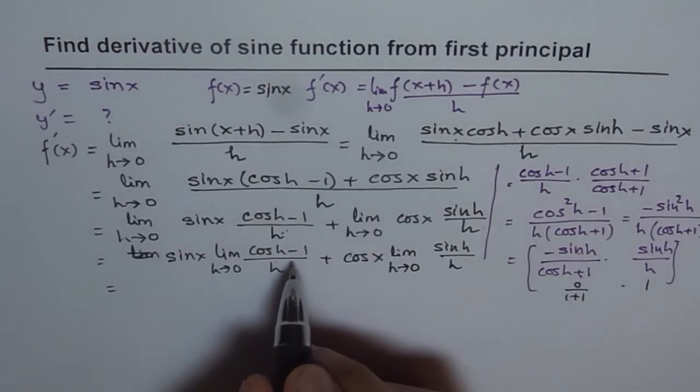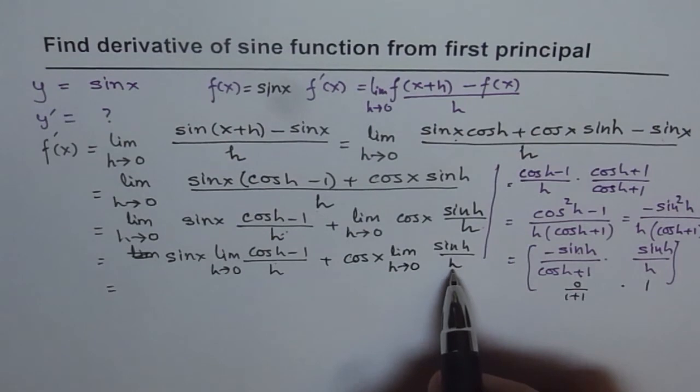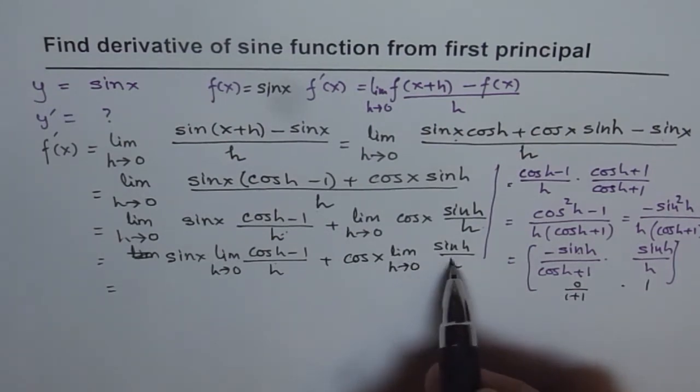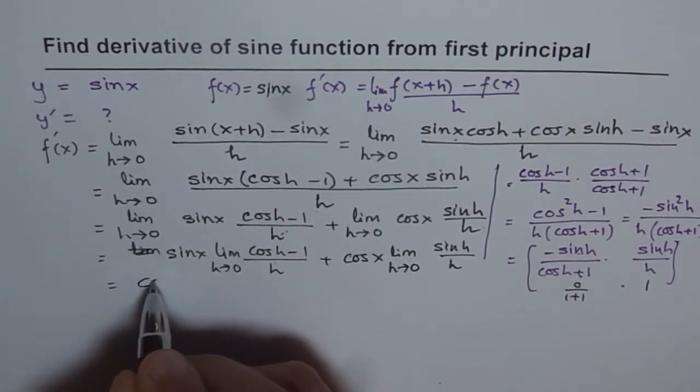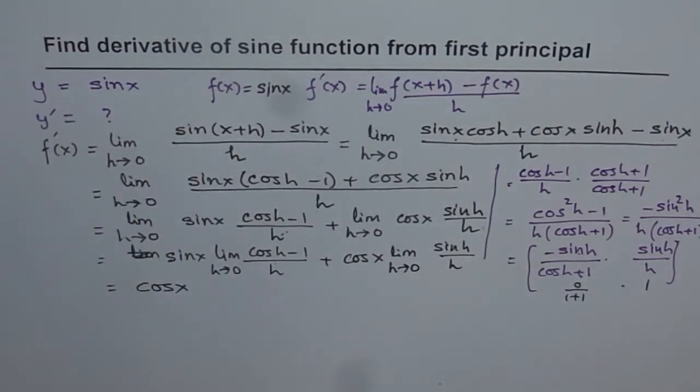And the second term is, we need limit of sin h over h. When h approaches 0 is 1, so we get cos x. So we get derivative of sin x as cos x.